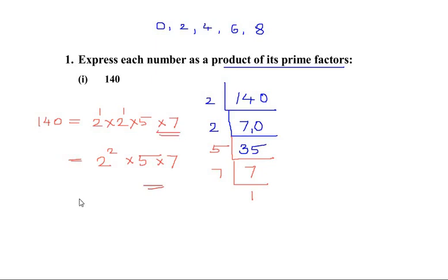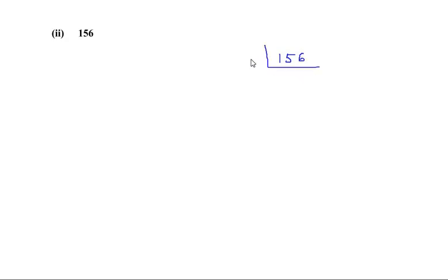Now let us look at the next question — we have to express the composite number 156 as a product of prime numbers. You can see that 156 ends with an even number 6, which means it is divisible by 2. Dividing 156 by 2 gives us 78. Again the number ends with an even number, so we can divide 78 by 2 again, giving us 39.